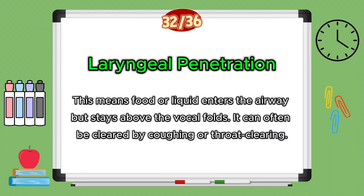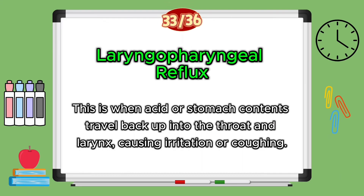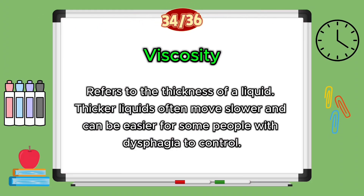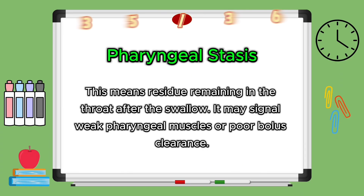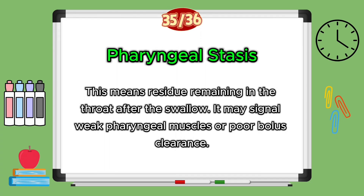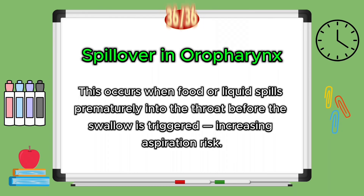Laryngeal penetration means food or liquid enters the airway but stays above the vocal folds — it can often be cleared by coughing or throat clearing. Laryngopharyngeal reflux is when acid or stomach contents travel back up into the throat and larynx, causing irritation and coughing. Viscosity simply refers to the thickness of liquid; thicker liquids move slower and can be easier for some people with dysphagia to control. Pharyngeal stasis refers to residue remaining in the throat after your swallow, which may signal weak pharyngeal muscles or poor bolus clearance. Spillover in the oropharynx occurs when food or liquid spills prematurely into the throat before the swallow is triggered, increasing aspiration risk.